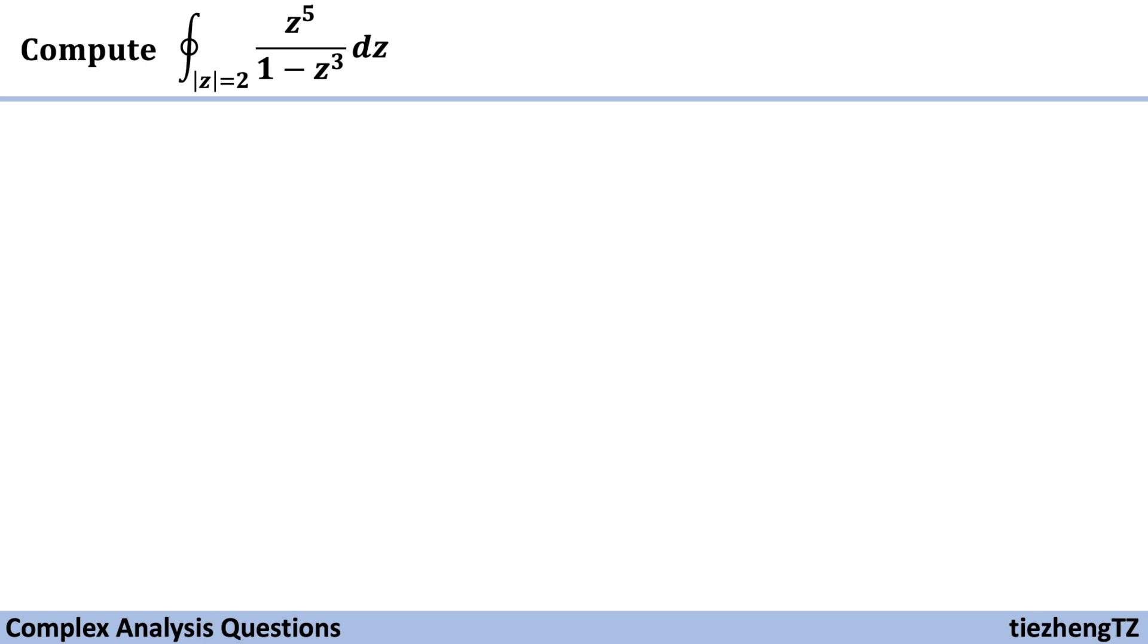This video will illustrate how to compute the integral of z^5 over 1 minus z^3 dz in the given domain |z| equals 2.